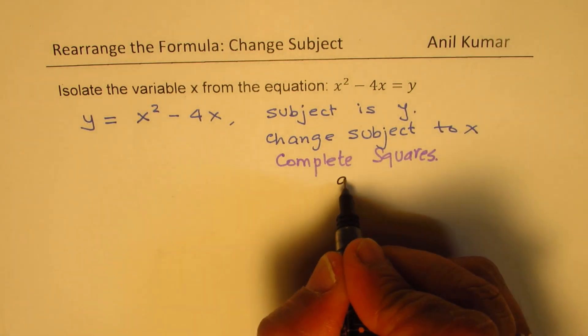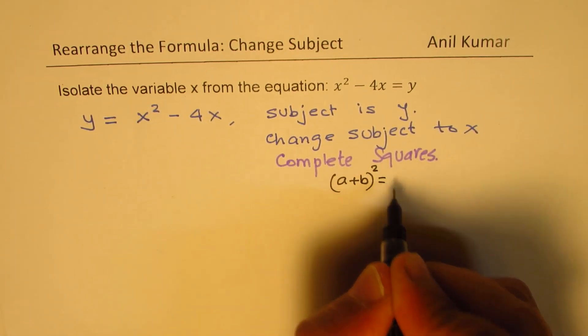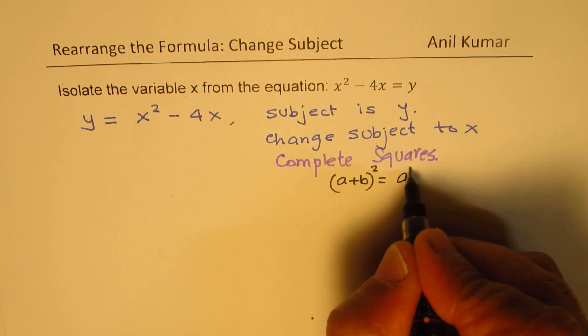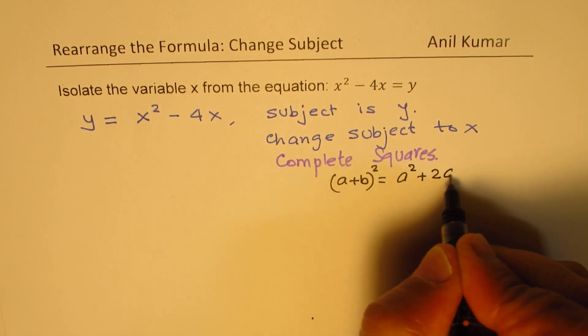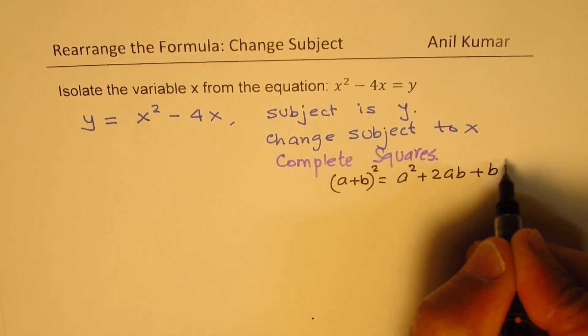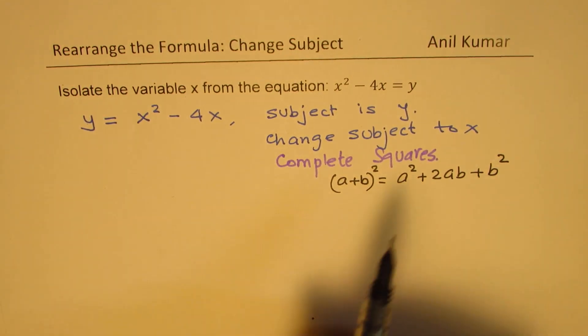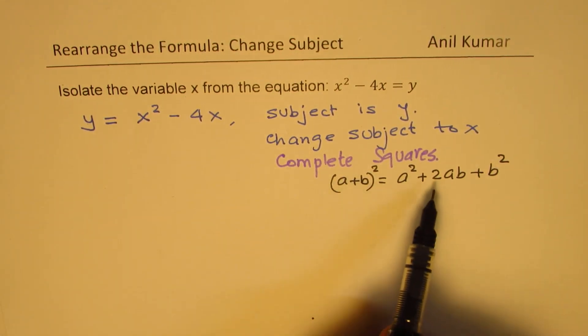Well, a plus b whole square is a square plus 2ab plus b square. To get a form of a perfect square, we need to have something like this.